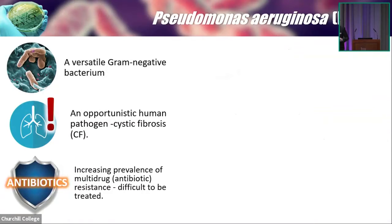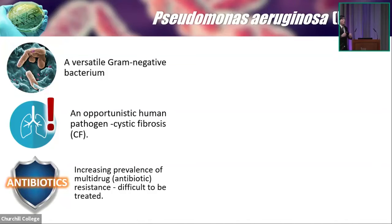So it's about Pseudomonas aeruginosa. In case you don't know, it is actually a versatile gram-negative bacteria which is widely available in a whole range of environments. For example, you can find it from the soil, from the water, or sometimes you can even find it on your skin. But it won't cause a huge problem to healthy people like us. But for those immunocompromised patients, you need to watch out because it will cause some very nasty effects to your body.